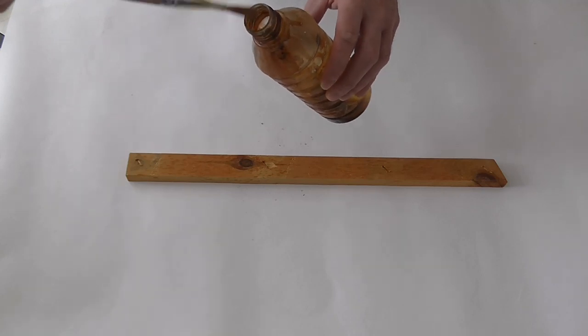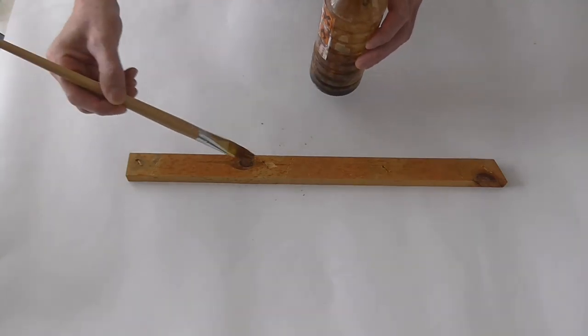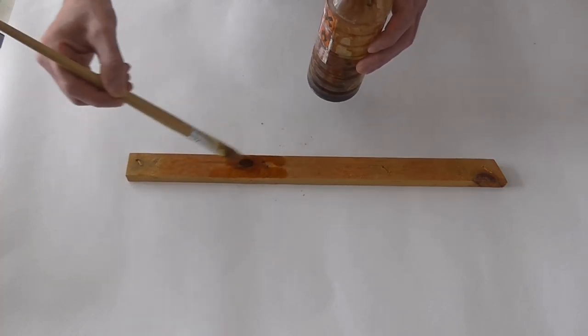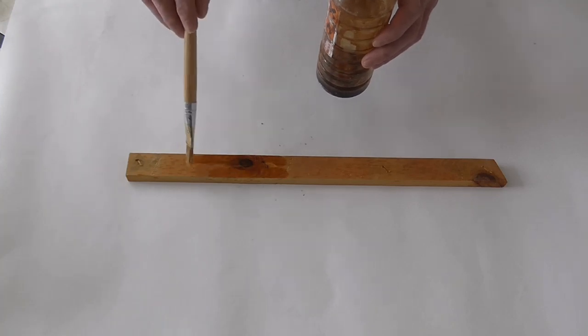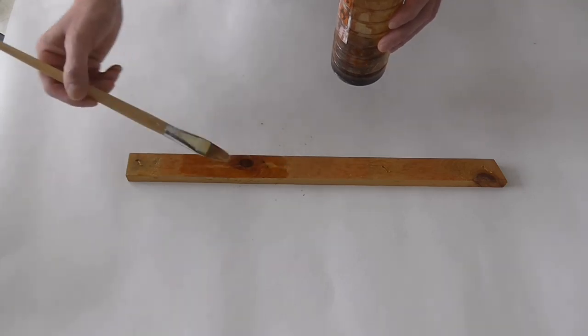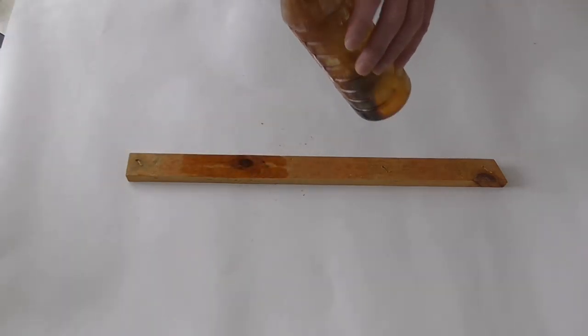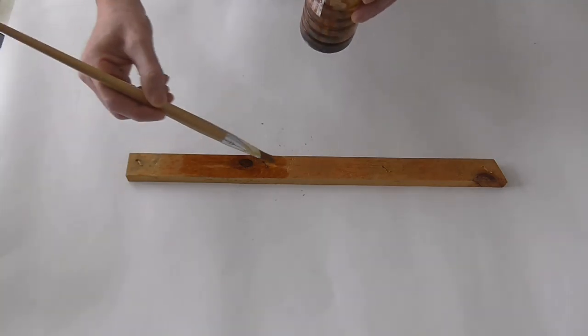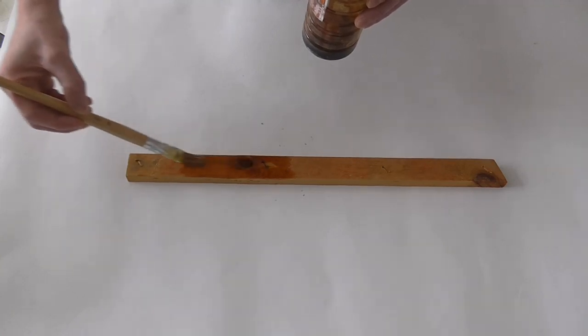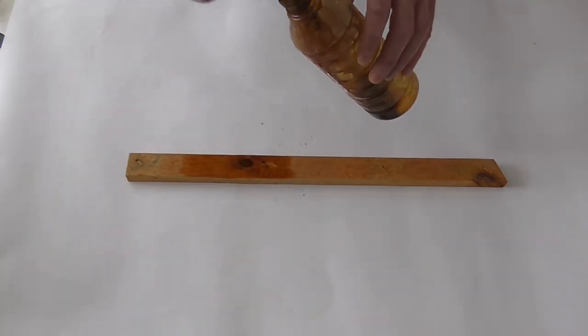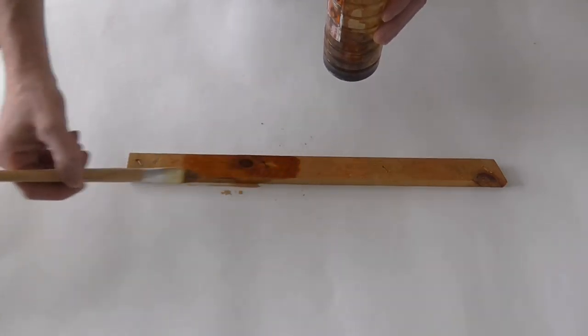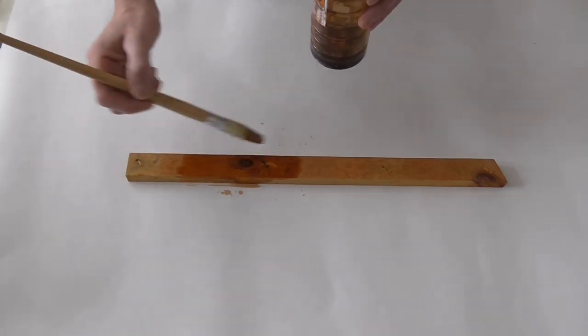And what you want to do when you're covering the knots, make sure you go over the area and then some, because it can seep through and weep around when you put the knotting on. Now this knotting, it dries really quickly with it being methylated spirits. Now that'll do for the first coat.